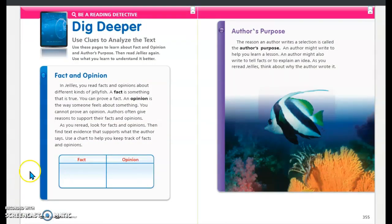All right, I hope you enjoyed the story. So in this story, we're looking at a fact. So a fact is something that is true, and it can be proven to be true. And also we're looking at an opinion. An opinion is the way someone feels about something. You cannot prove an opinion. Authors often give reasons to support their facts and opinions. So please continue on with the weekly lesson. And that is our story of the week.